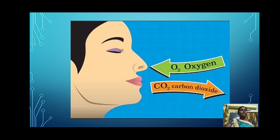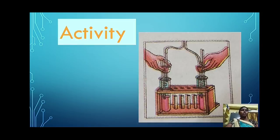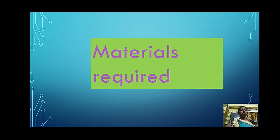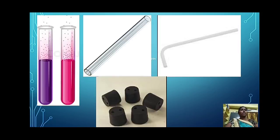For better understanding, we can go through an activity. First of all, we consider the following apparatus and materials required for this activity. Materials required: two boiling test tubes, glass rod, twice bent glass tube, two hole rubber corks, phenolphthalein solution and lime water.